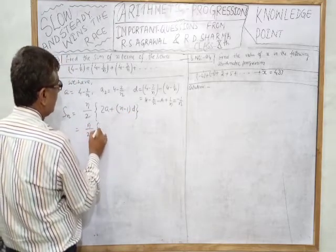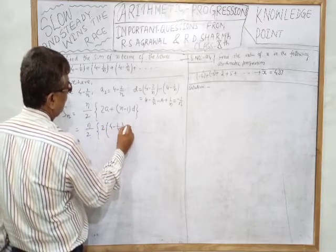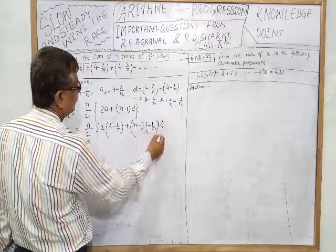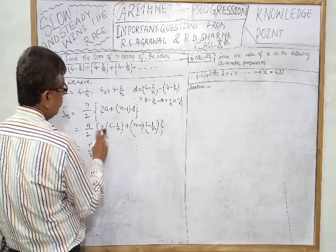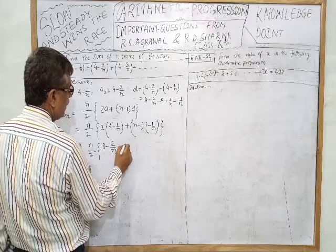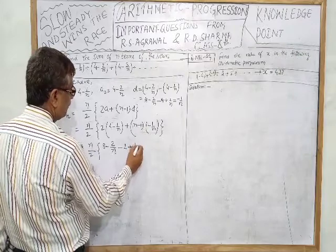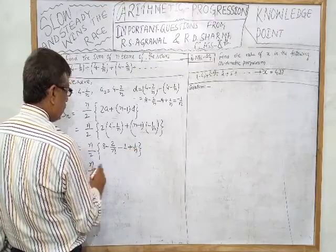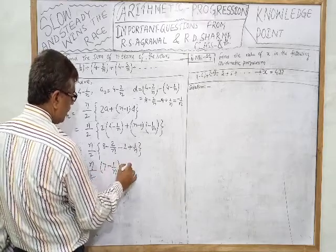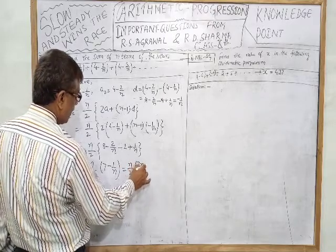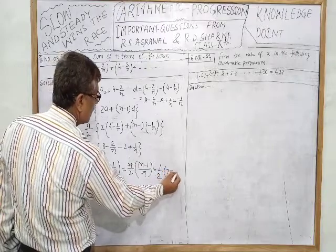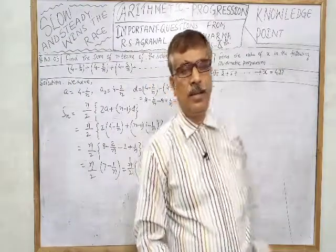Substituting: Sₙ = n/2 × [2(4 - 1/n) + (n-1)(-1/n)] = n/2 × [8 - 2/n - n/n + 1/n] = n/2 × [8 - 2/n - 1 + 1/n] = n/2 × [7 - 1/n]. This simplifies to n/2 × (7n - 1)/n = (7n - 1)/2. So the sum of n terms is (7n-1)/2.